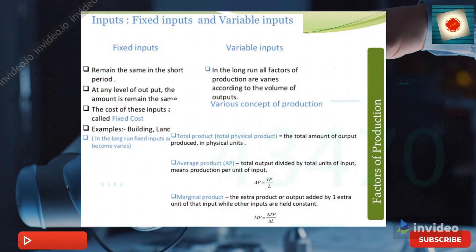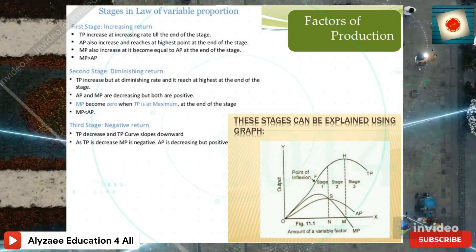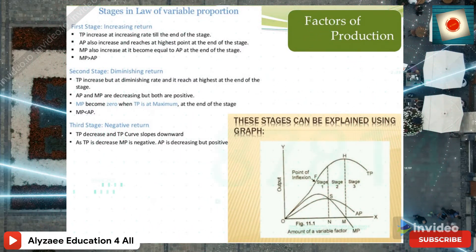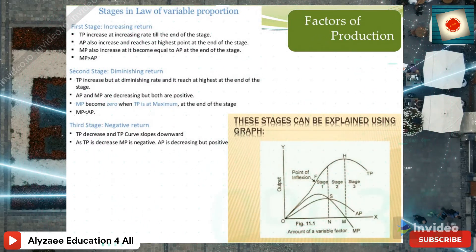Now we will discuss the three different stages under the law of variable proportions. In the first stage, increasing returns occur: total product increases at an increasing rate, average product also increases and reaches its highest point, and marginal product also increases, becoming equal to average product at the end of the stage — marginal product is greater than average product.